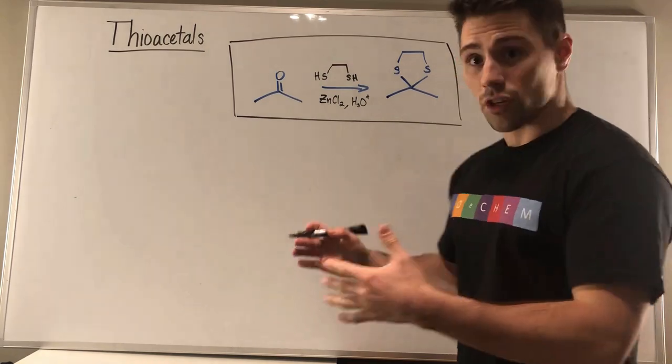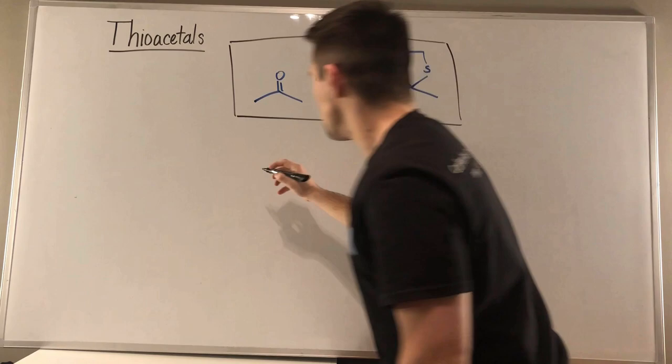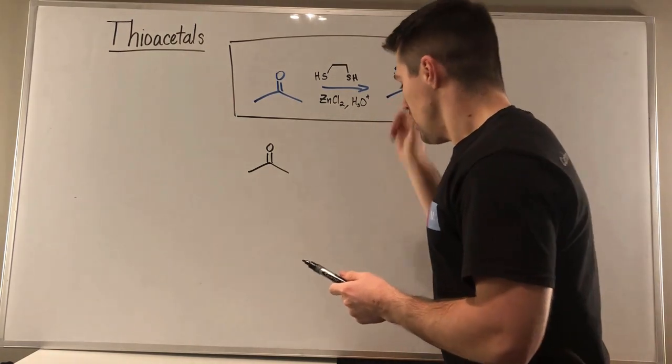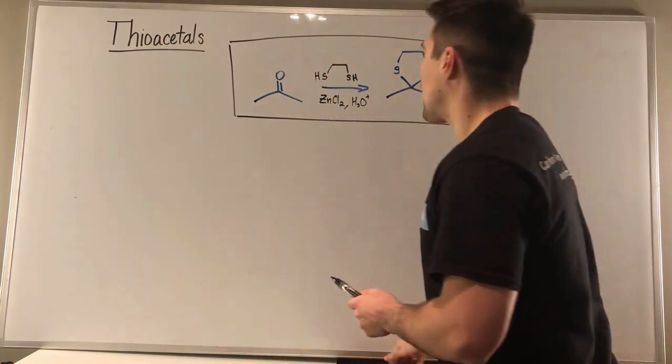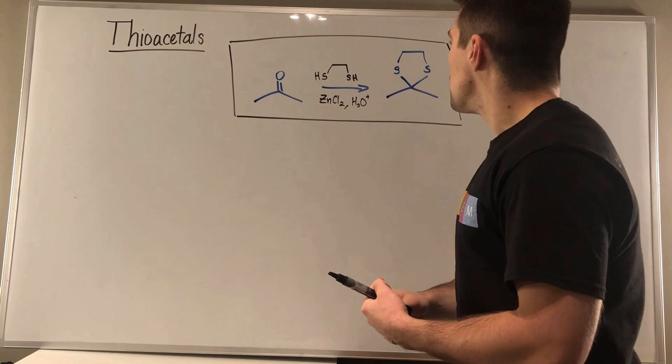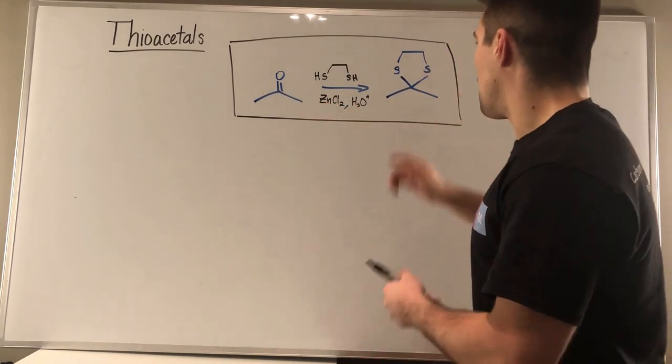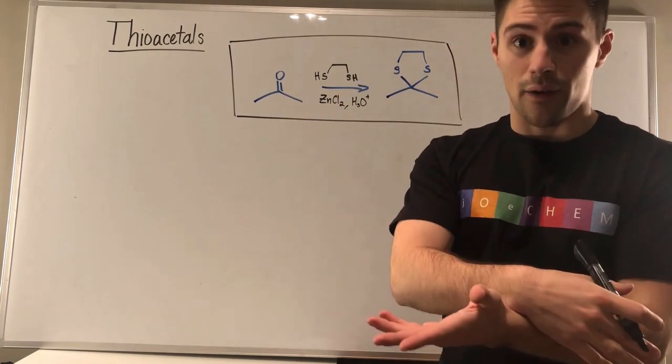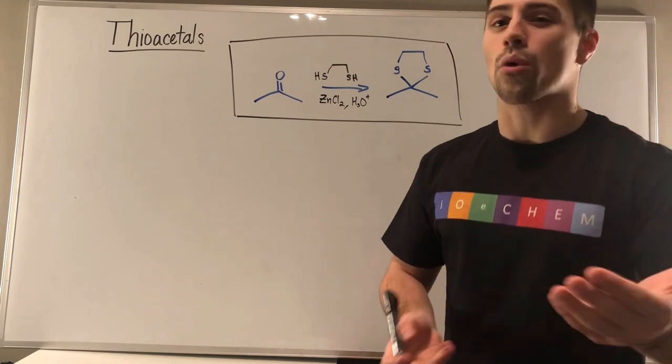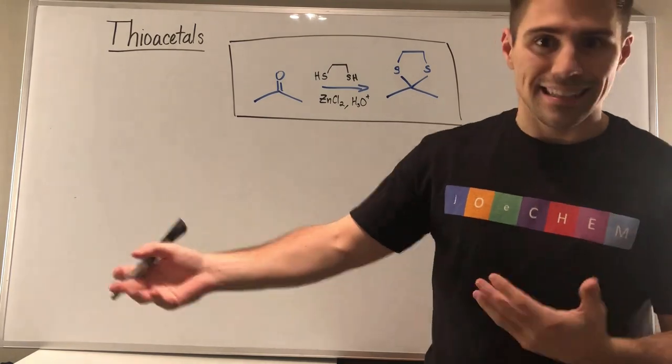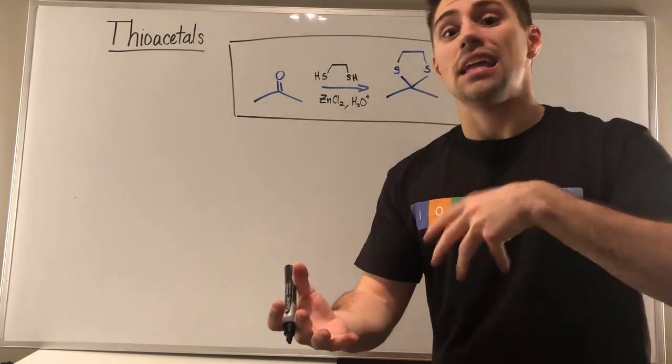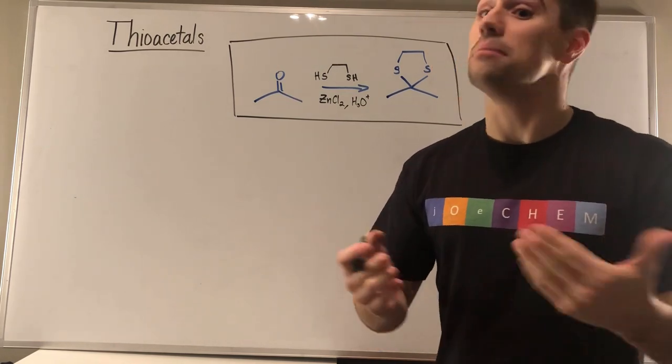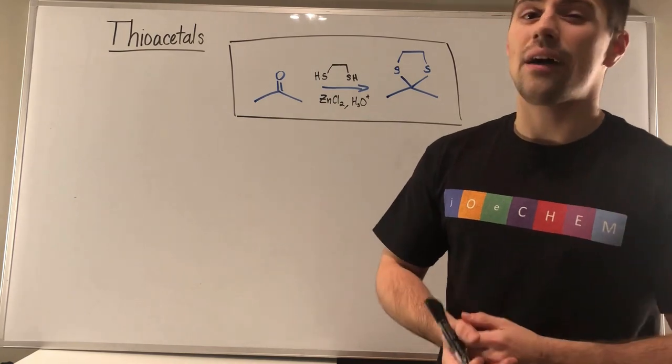Okay, so what I want to do in this video first is we have this reaction right here. We're going from a ketone. I like to just pick a very generic carbonyl whenever I do these reactions, I always just start with acetone. So what I want to do is just start with acetone, see what happens when I take this sulfur analog, this disulfide. We throw in some zinc chloride, some acid and then we get this thioacetal at the end.